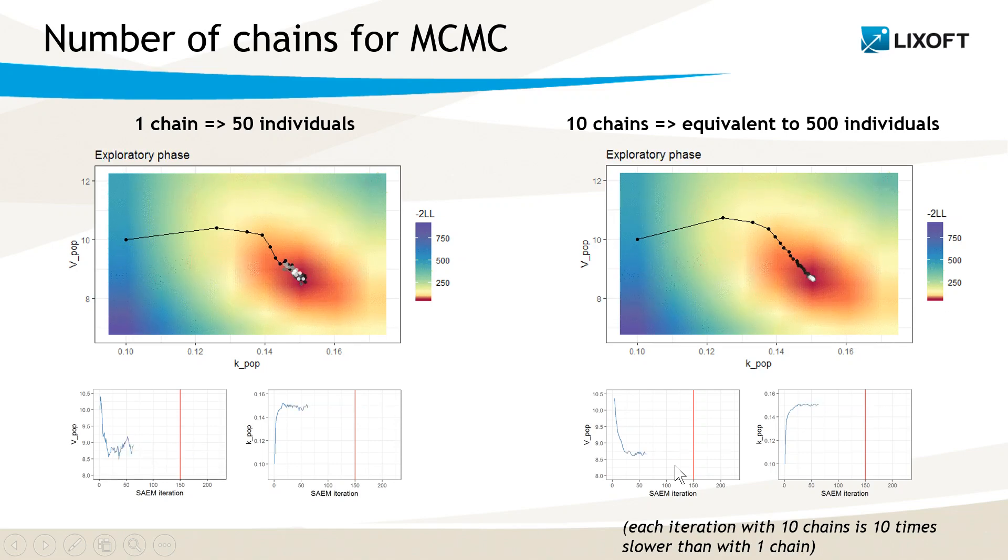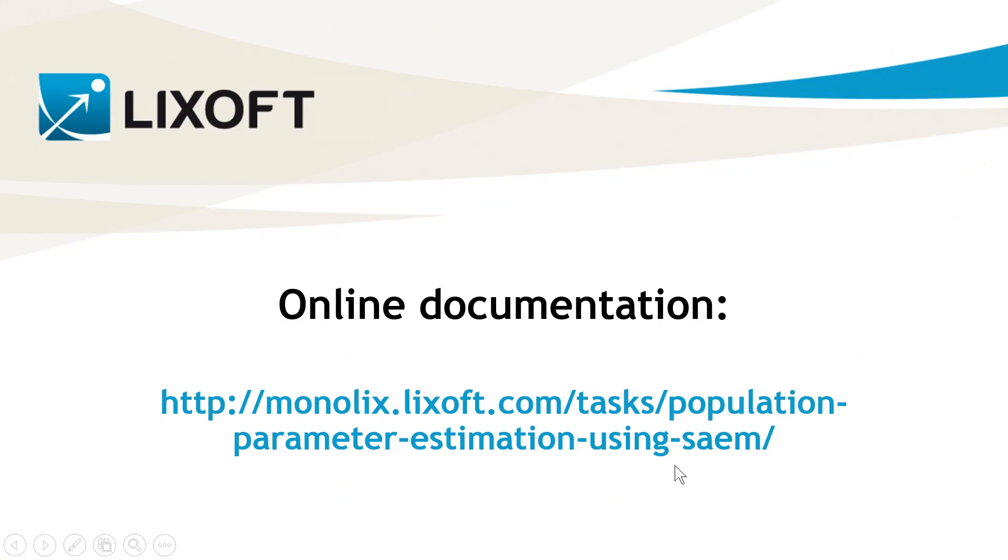Increasing the number of chains can help convergence in some cases. For instance, if you have a correlation term that goes to 1 or minus 1. But as I said, it will take longer to run. That's it for today. Have a nice week.